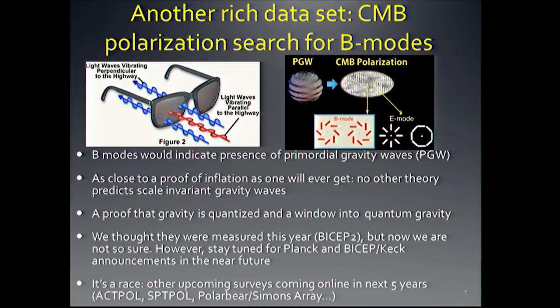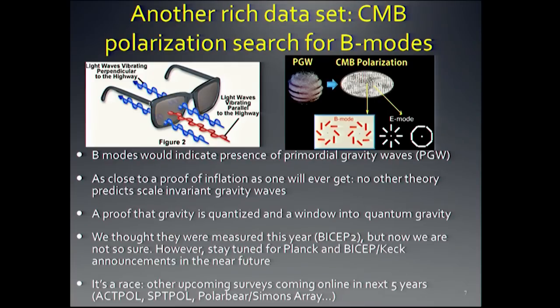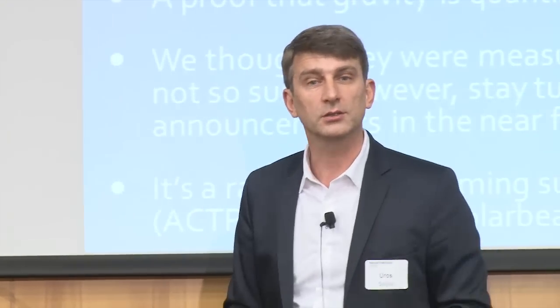It would also be proof that gravity is quantized — a window into quantum gravity. We thought we had it back in March, but now we're not so sure. In a few weeks there will be a new release from the joint Planck and BICEP analysis that hopefully will shed more light. And even if that still doesn't give us detection, more data is coming from BICEP, Keck Array, and many other experiments. It really is a race to who measures the tensor-to-scalar ratio r first.